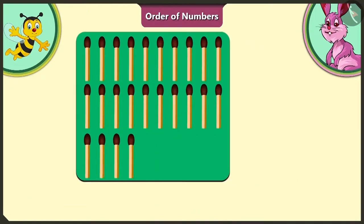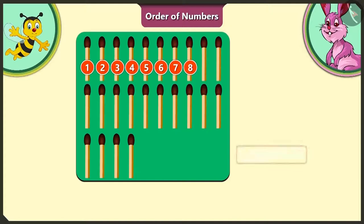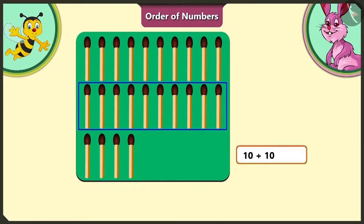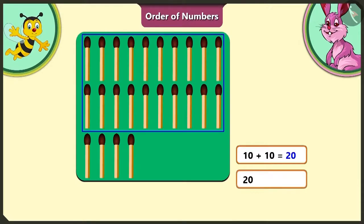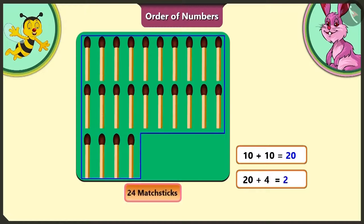Can you tell me how many matchsticks are there on the green card? The first group of matchsticks on the green card has 1, 2, 3, 4, 5, 6, 7, 8, 9, 10 matchsticks. If we add the next group to the first group of 10, there will be 20 matchsticks. And adding these 4 remaining matchsticks gives us 24 matchsticks in total.